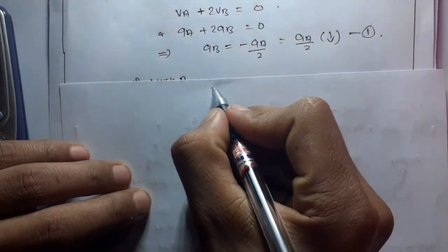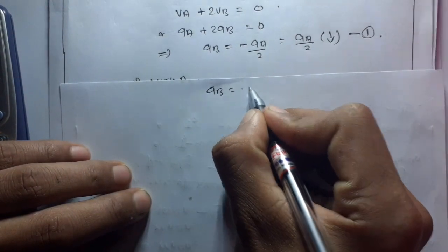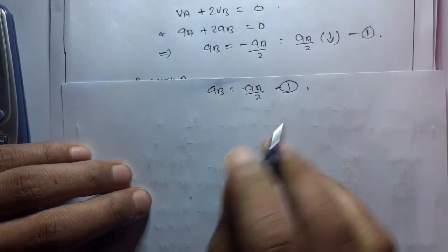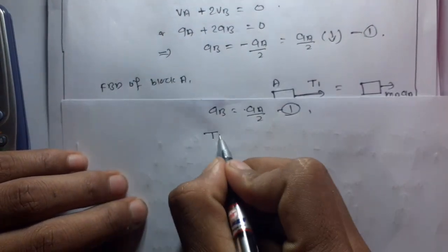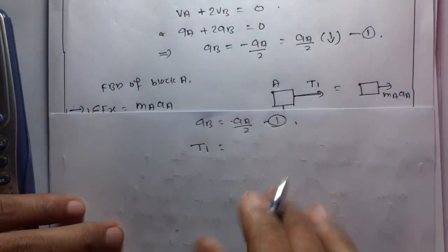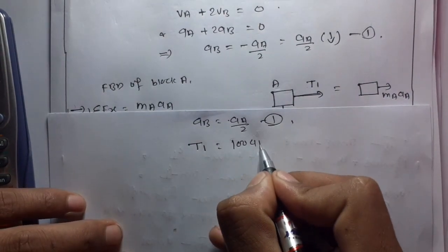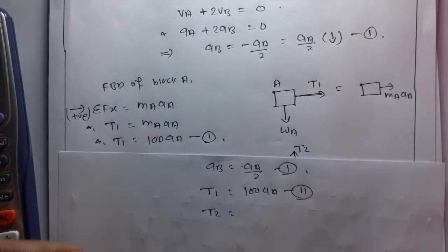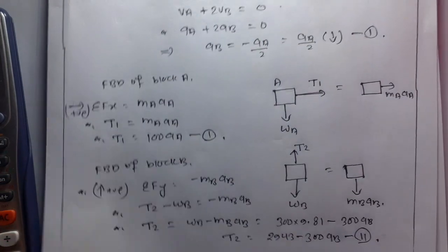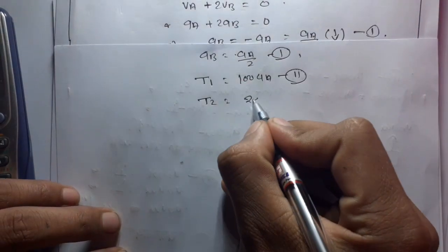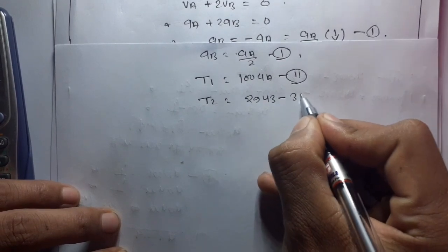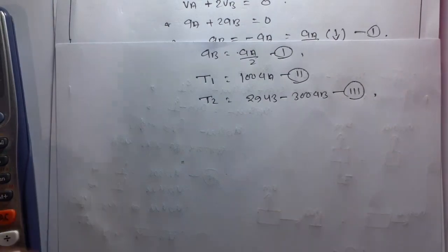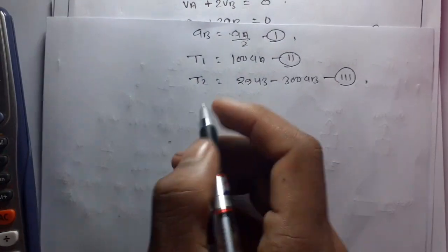Summarizing the three equations: equation one is aB equals aA over 2; equation two is T1 equals 100 aA; and equation three is T2 equals 2943 minus 300 aB.